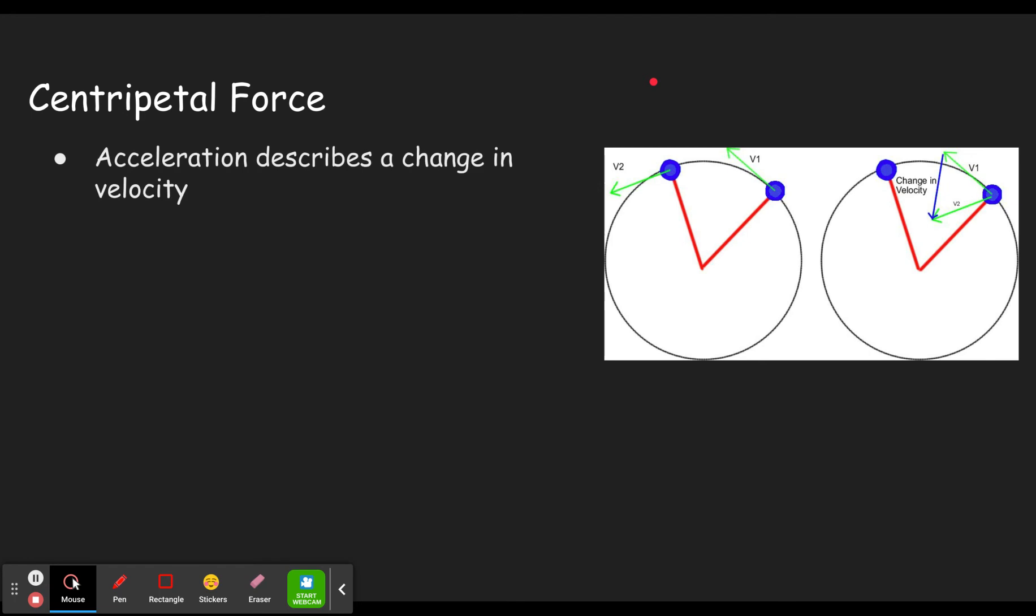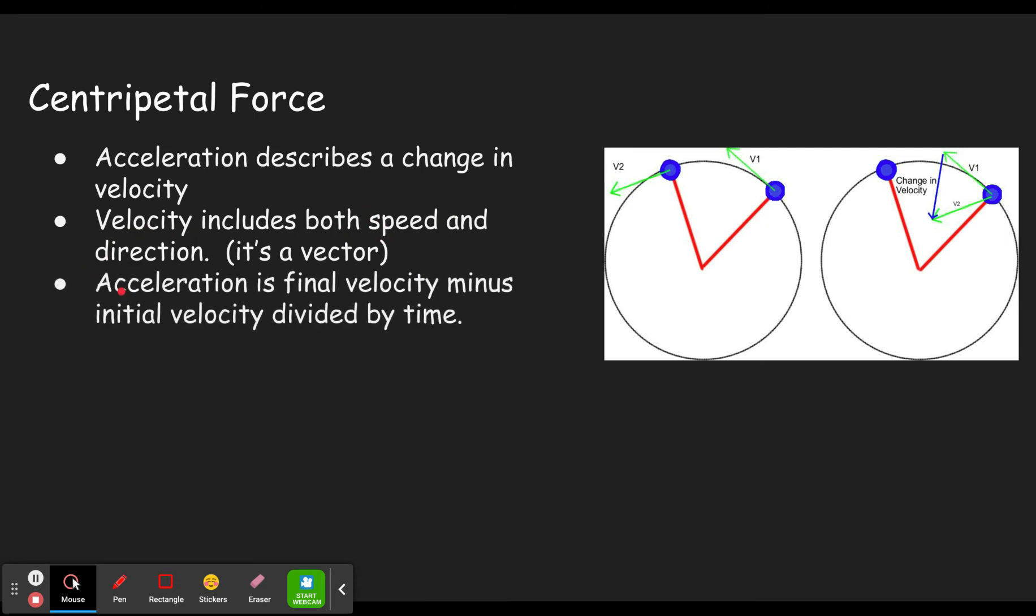We know that acceleration describes a change in velocity. And we know velocity includes both speed and direction. So here we're talking about things going in a circle. They aren't necessarily going to be changing speed, but they'll definitely be changing direction. So acceleration is final velocity minus initial velocity. If we have our v1 here and our v2 here, if we look at how much it changes from v1 to v2, we can put v2 over here next to v1 like we see in this picture.